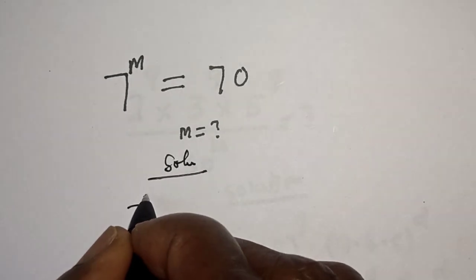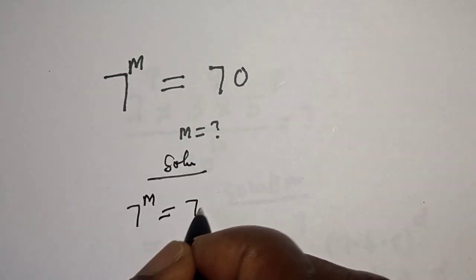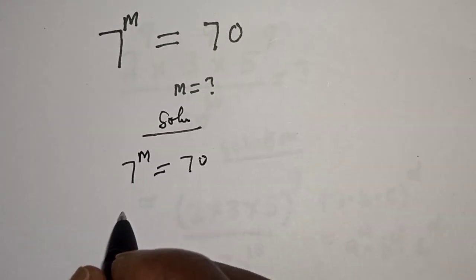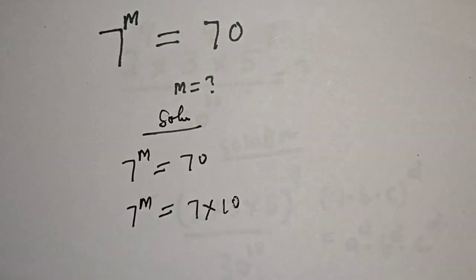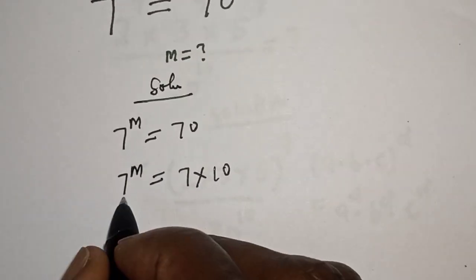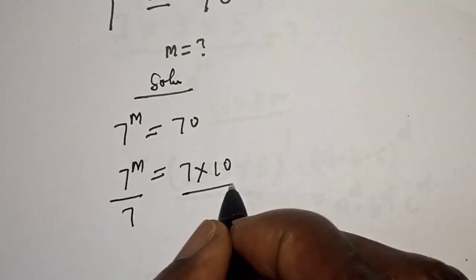7 raised to power m is equal to 70. Then this is 7 raised to power m equals 7 times 10. Let's divide both sides by 7.